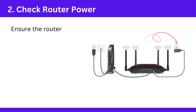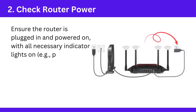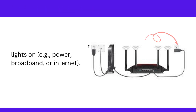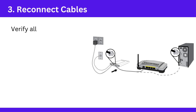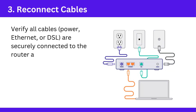Step 2: Check router power. Ensure the router is plugged in and powered on, with all necessary indicator lights on — e.g., power, broadband, or internet. Step 3: Reconnect cables. Verify all cables — power, ethernet, or DSL — are securely connected to the router and your modem, if separate.